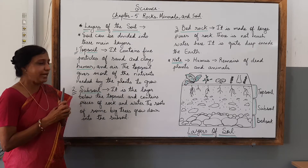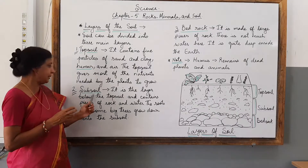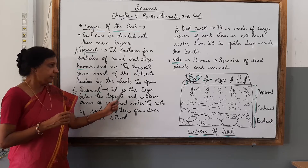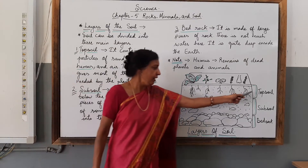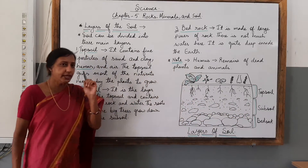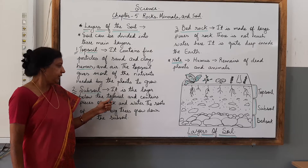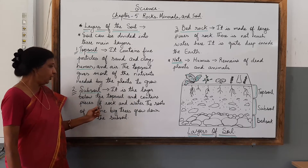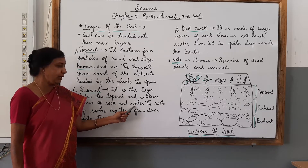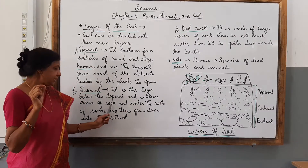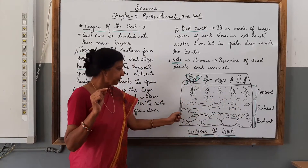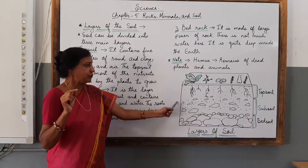The next layer of the soil is subsoil. It is the layer below the topsoil. The second layer is below the topsoil and contains pieces of rock and water. Here you can see pieces of rock and water in the subsoil.